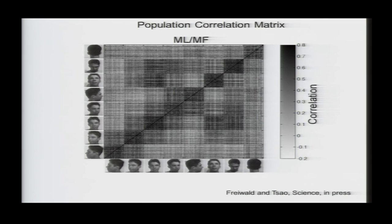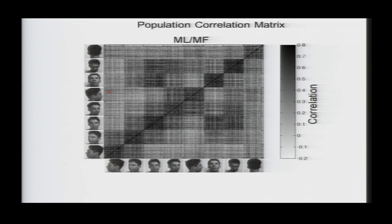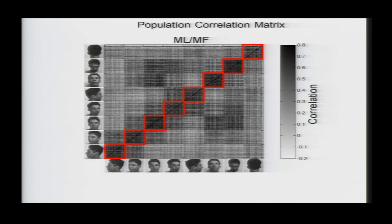So, the distinction between these different face patches became especially clear when we computed these population correlation matrices. So, here, in this 200 by 200 matrix, this voxel here represents the correlation between the population vector response to this face looking to the left and to this face also looking to the left. If you move up here, this entry corresponds to the population vector correlation between this face looking to the left and this face looking to the right. And the correlation is low, indicated by this entry's bright color. So, in ML MF, what you see most prominently is this pattern of squares along the diagonal, indicating maximum similarity in the population response to faces looking in the same direction.